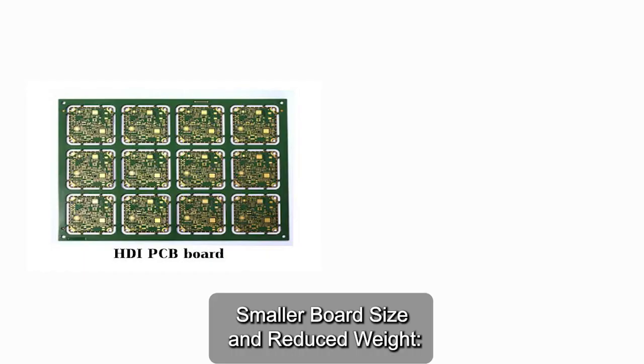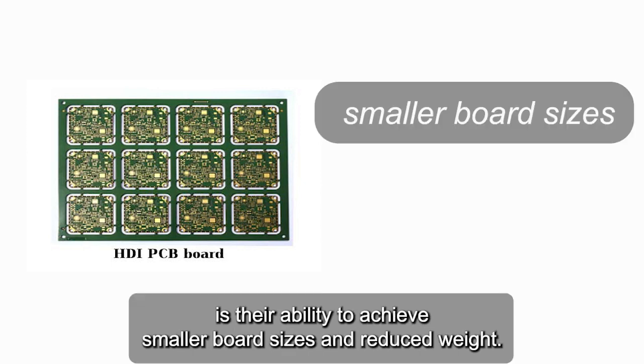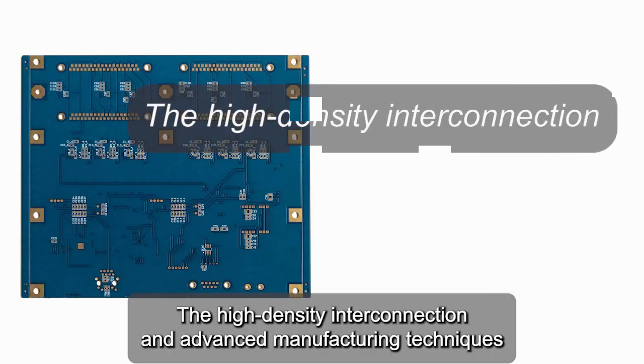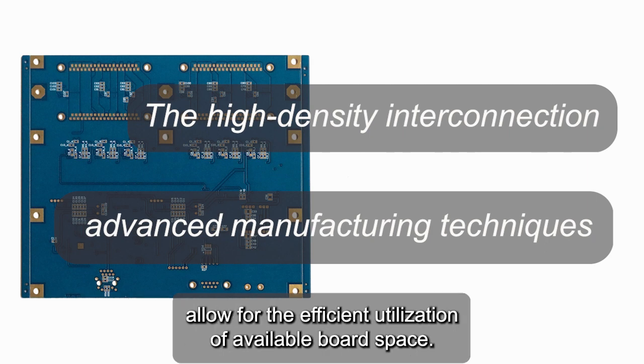Smaller Board Size and Reduced Weight. One of the key advantages of HDI PCBs is their ability to achieve smaller board sizes and reduced weight. The high-density interconnection and advanced manufacturing techniques allow for the efficient utilization of available board space.